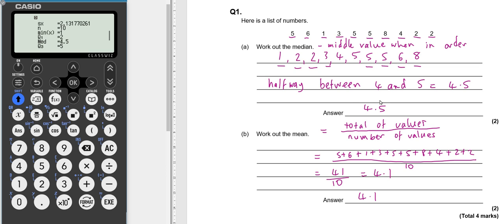If I needed to check the range, I can look at the minimum here is 1 and then go to the next page again and the maximum is 8. So 8 take away 1 is 7 if I wanted to check the range.